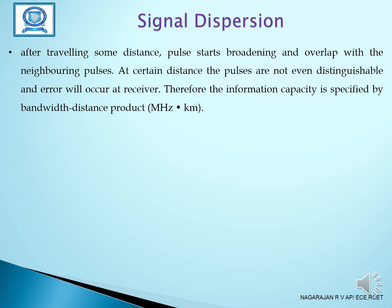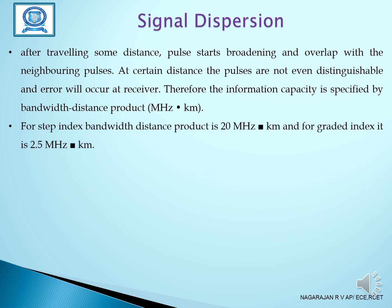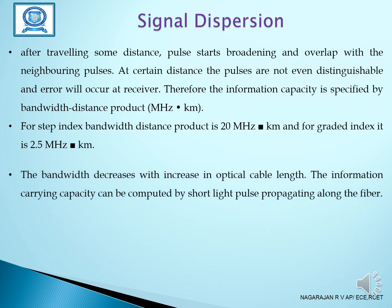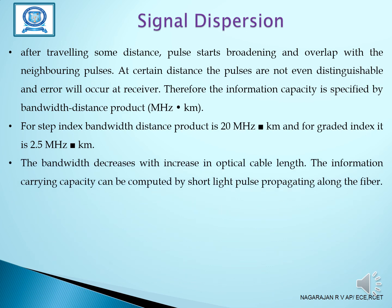Therefore, the information capacity is specified by the bandwidth-distance product. For step index fiber, the bandwidth-distance product is 20 MHz·km, and for graded index fiber it is 2.5 GHz·km. Bandwidth decreases with increases in optical cable length. The information carrying capacity can be computed by short light pulse propagating along the fiber.